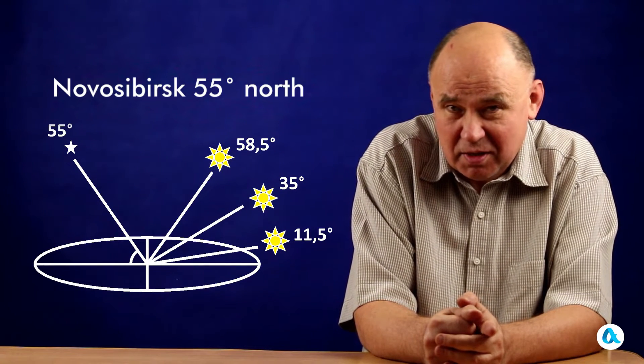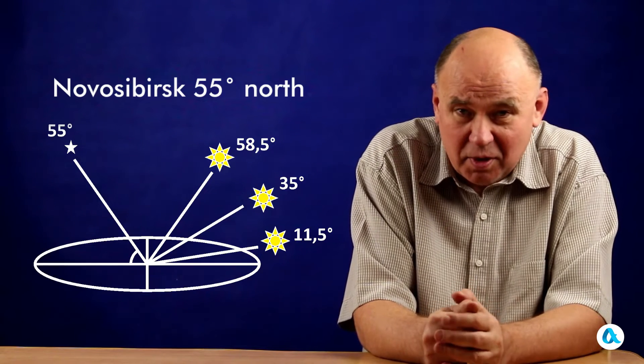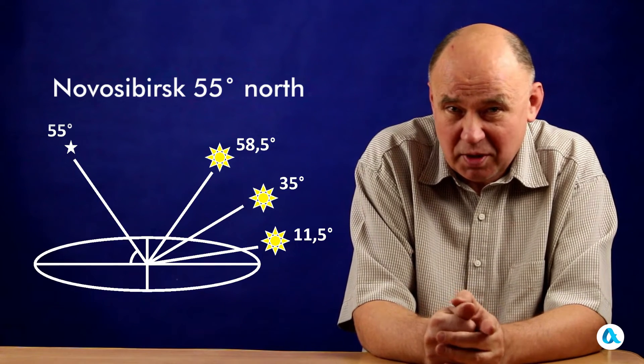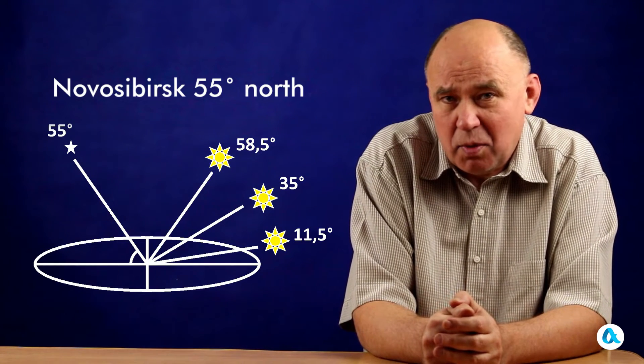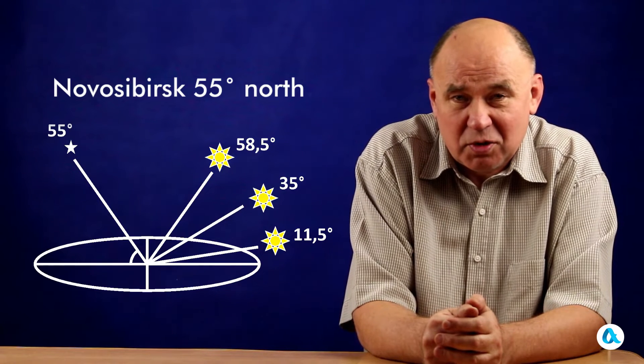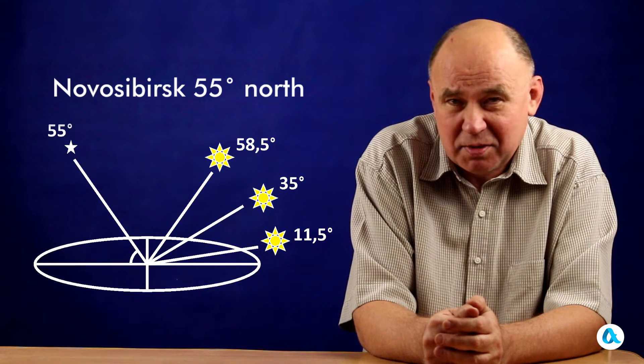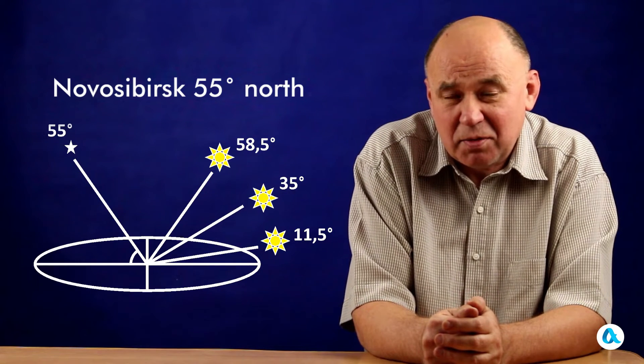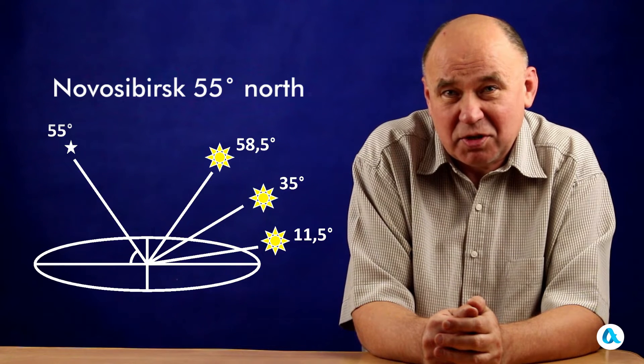That is the disparity in the Sun's midday ascents above the horizon during the summer and winter seasons. Well, it is apparent that it is of considerable importance. Let us observe what this leads to in relation to the illumination of the surface of the Earth.